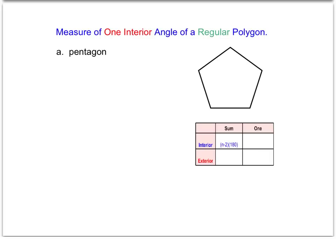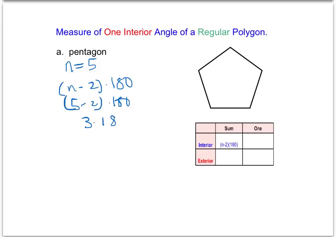Our first question asks us to find the measure of one interior angle of a regular polygon, starting with the pentagon. The sum of interior angles is given by the formula n minus 2 times 180, where n is the number of sides of the polygon. A pentagon has five sides, so we plug that in: five minus two times 180 gives us 540 degrees.